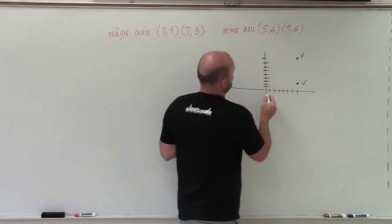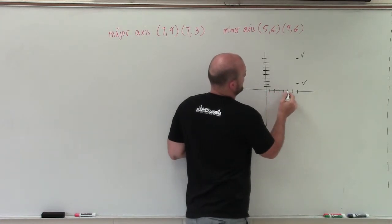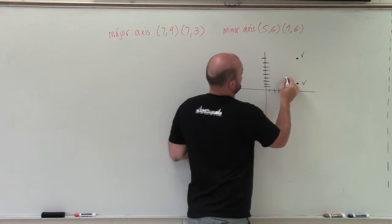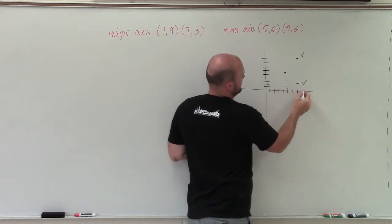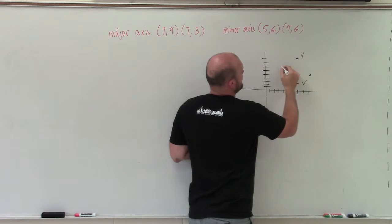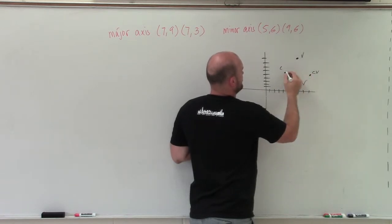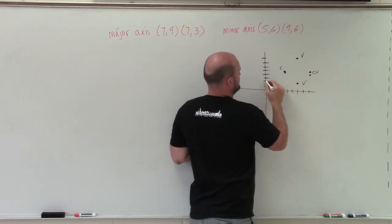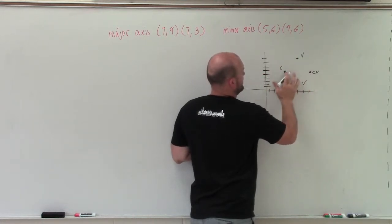Then the minor axis is at (5,6). [Plotting] And at (9,6). [Plotting] And these have to be my covertices.